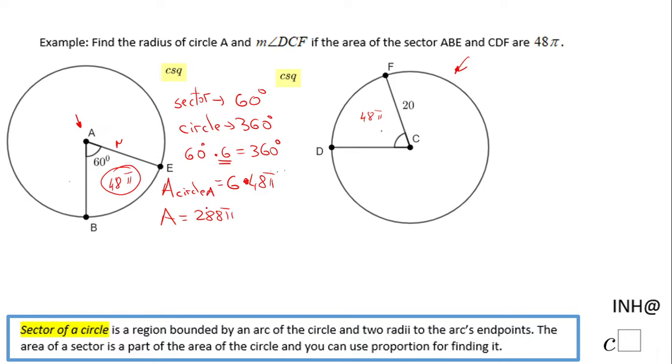I'm going to keep the answer in π. Okay, so this is a very fast way to find the area of the circle if you know the area of the sector, just because this angle is a very nice angle - it's 60 degrees, one-sixth of 360. And now if we have this area, we can find the radius.